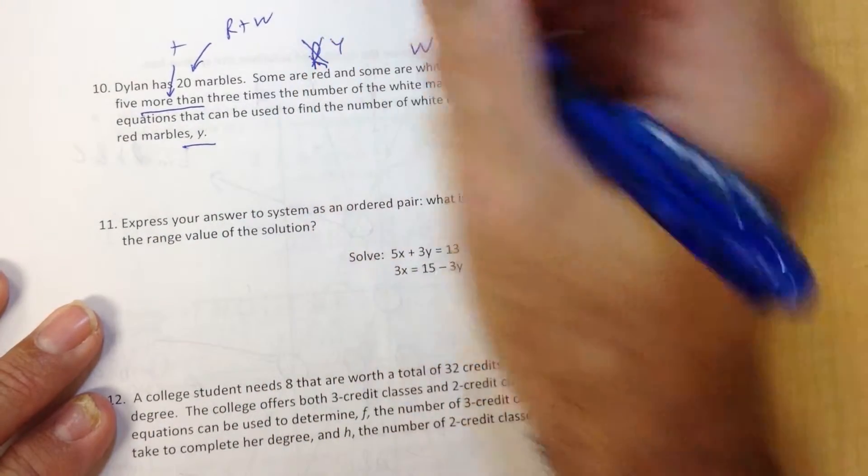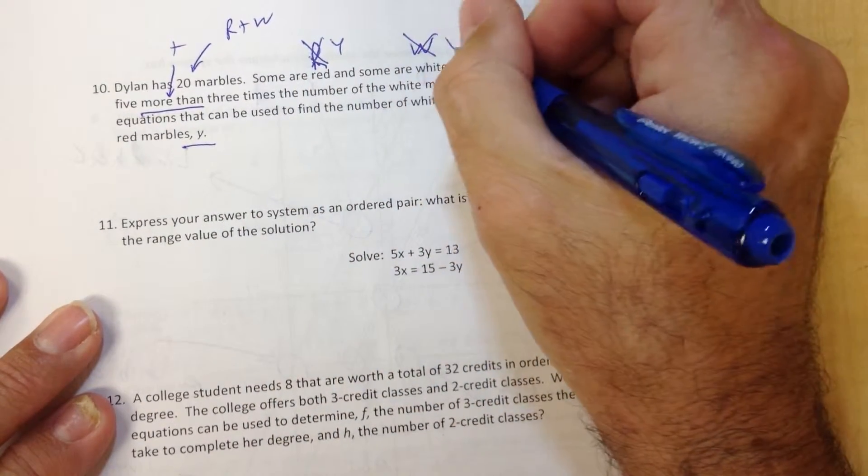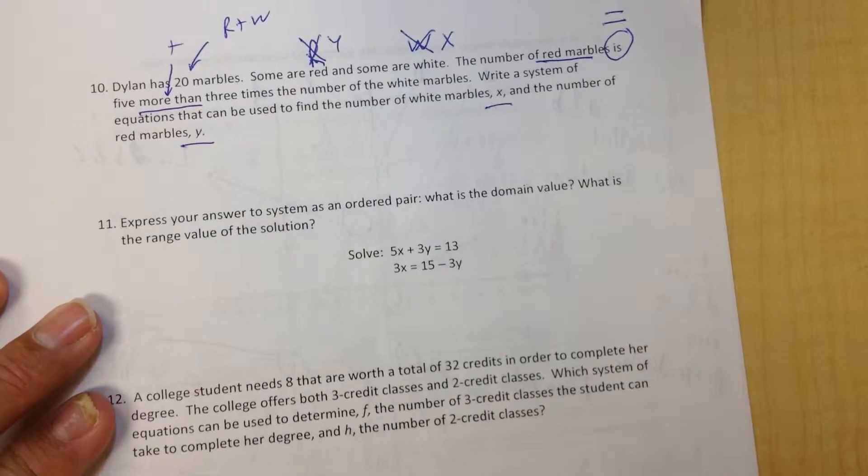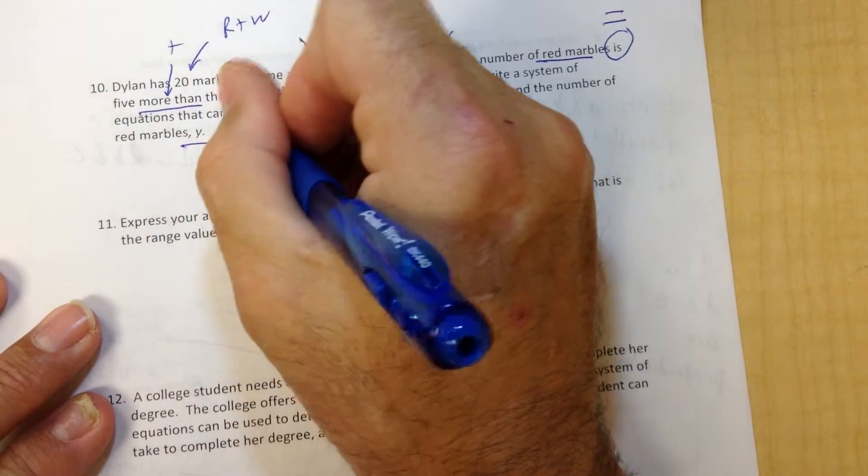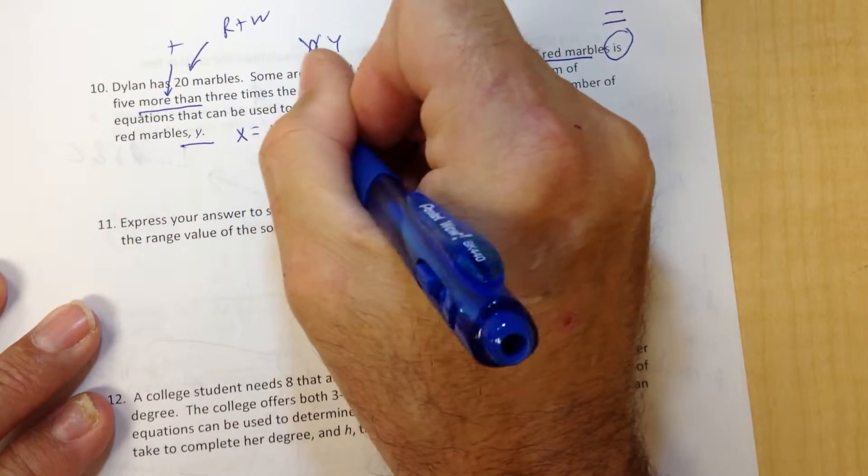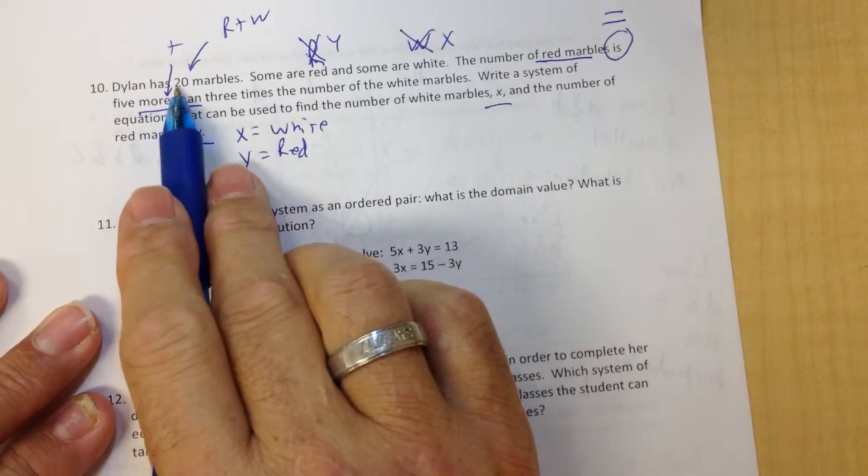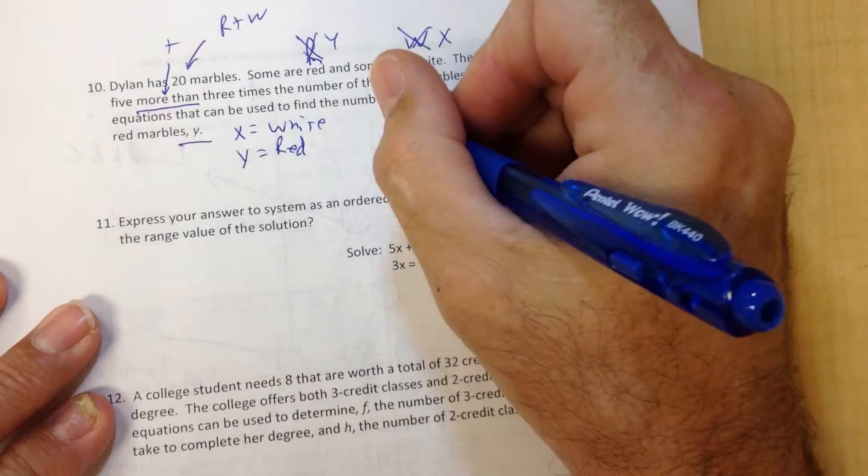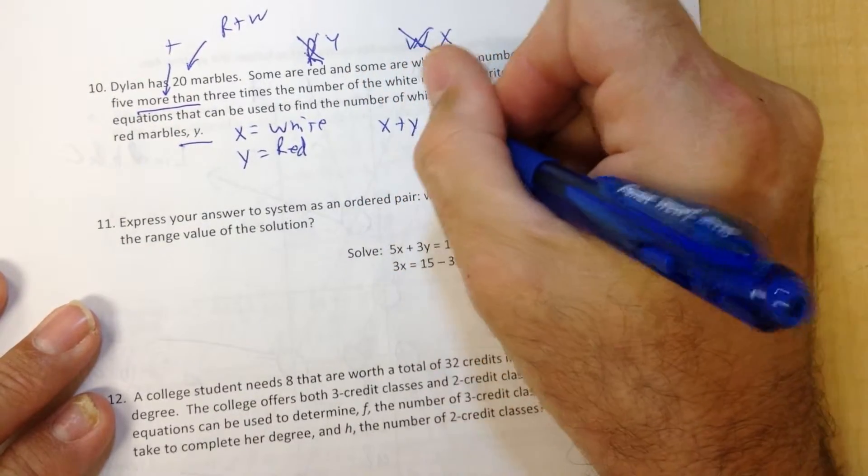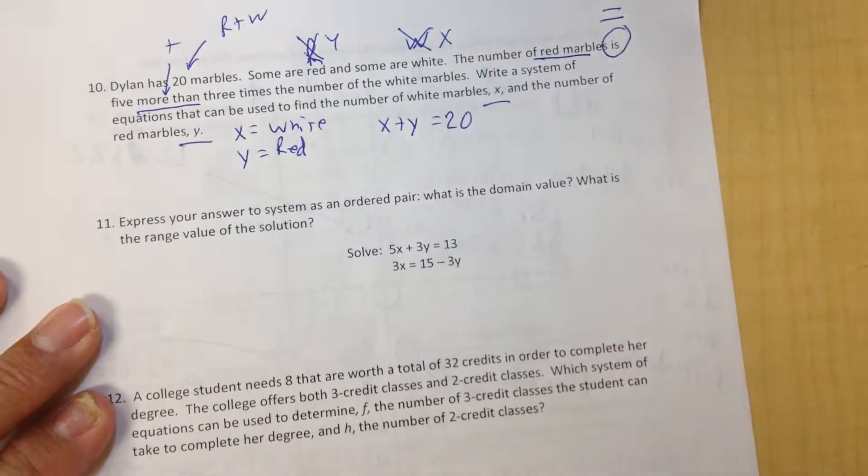Y will be red, and X will be white. Now, make sure you do this for your problem. So I'm going to put X equals white, Y equals red, and I know we have 20 marbles. So X plus Y equals 20 is one of my equations.